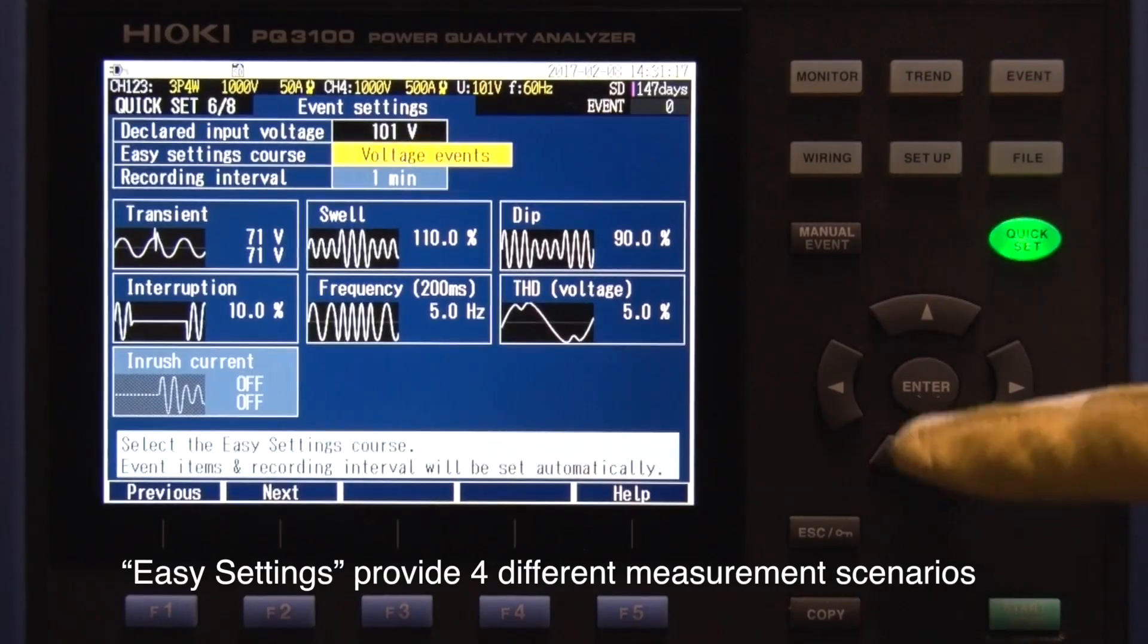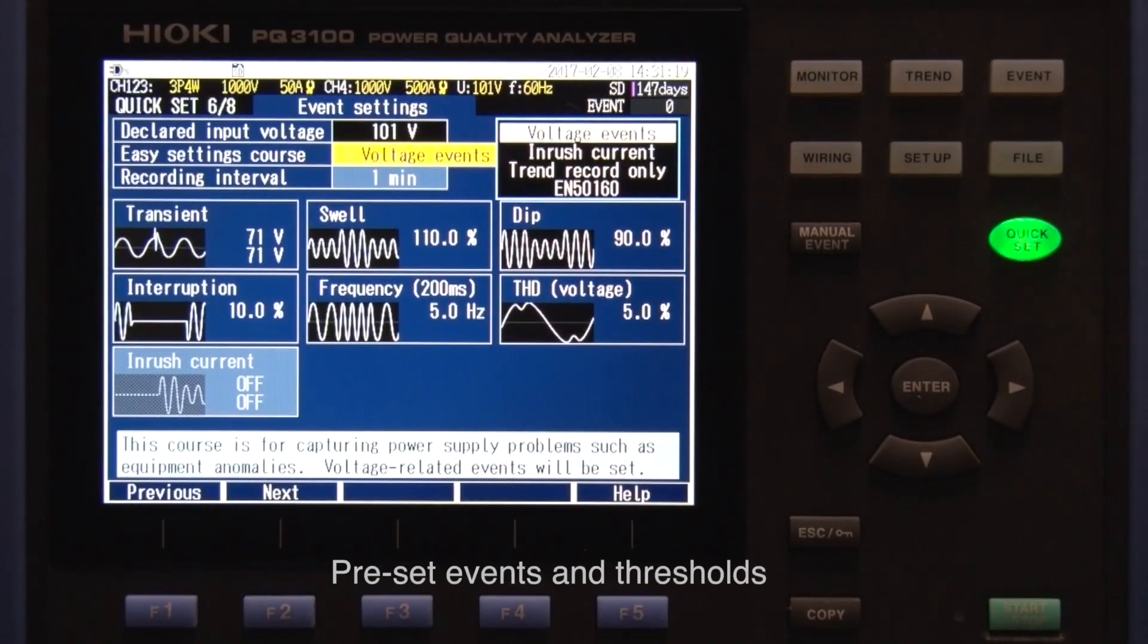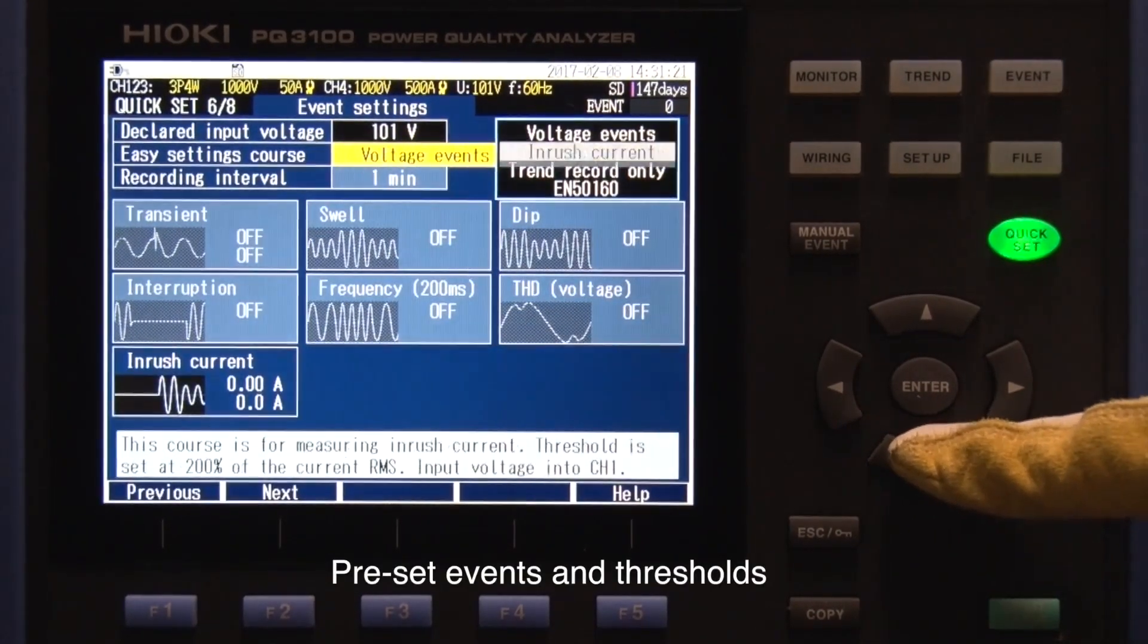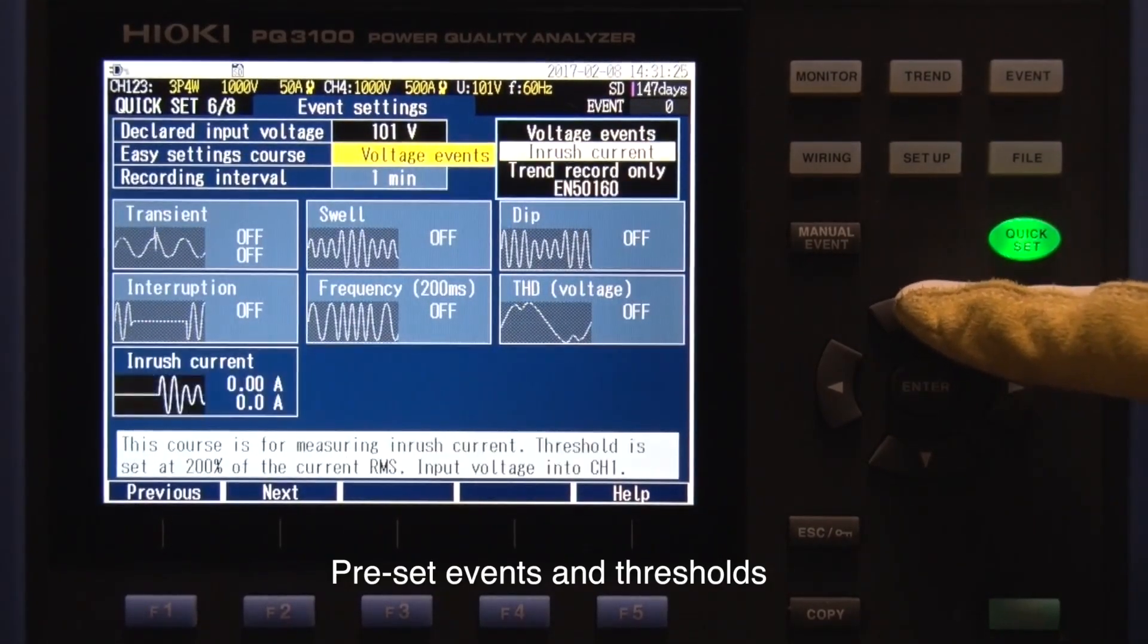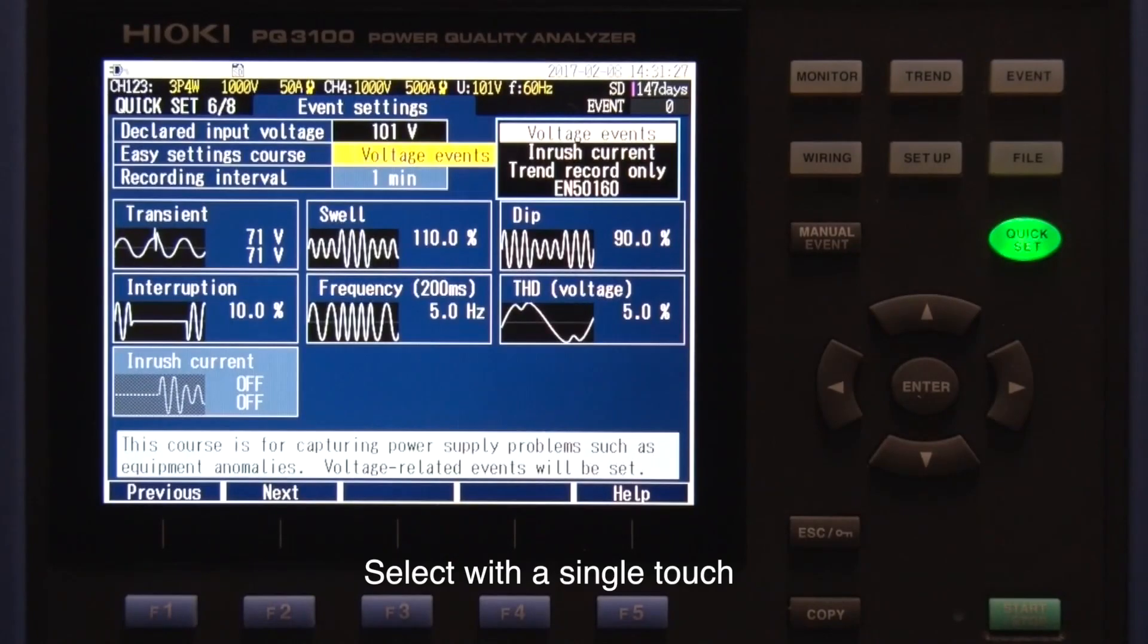Within the QuickSet function under Easy Settings, you can choose from several different measurement scenarios. The screen shows the threshold set for each parameter. Simply select the scenario with a single touch.